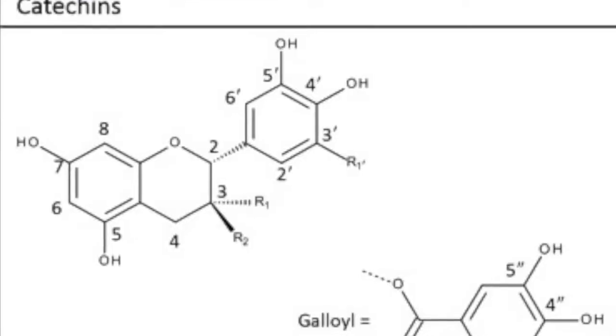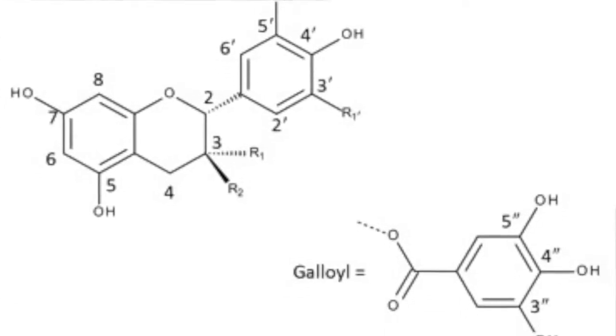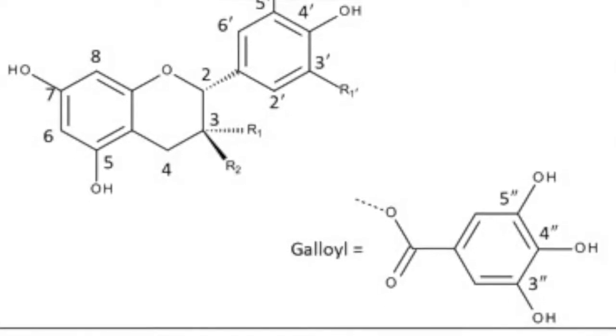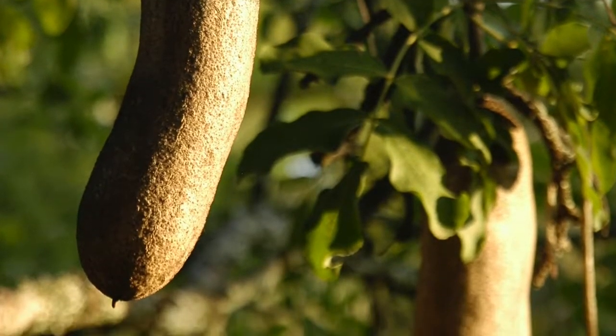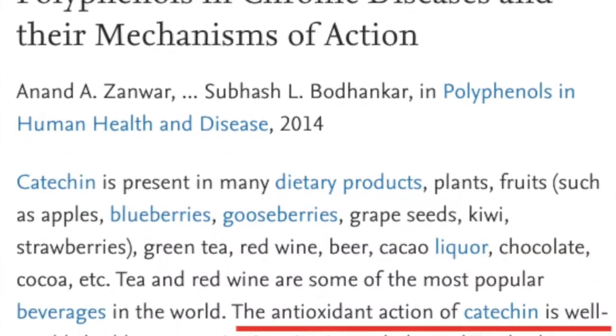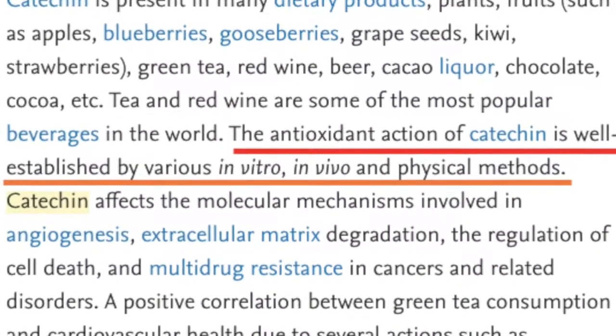The first one is catechins. Catechins are found in a lot of different fruit. Fruit that I've focused on before that is also quite high in catechins is the Sausage Tree, Kigelia africana. Catechins are an antioxidant and a free radical scavenger, and they are very effective and potent in that regard.